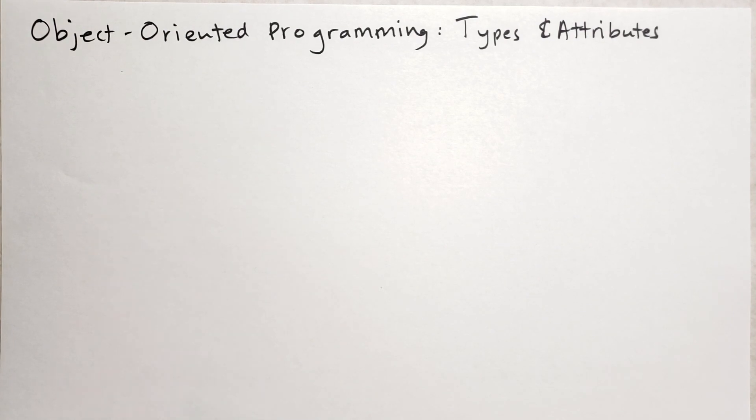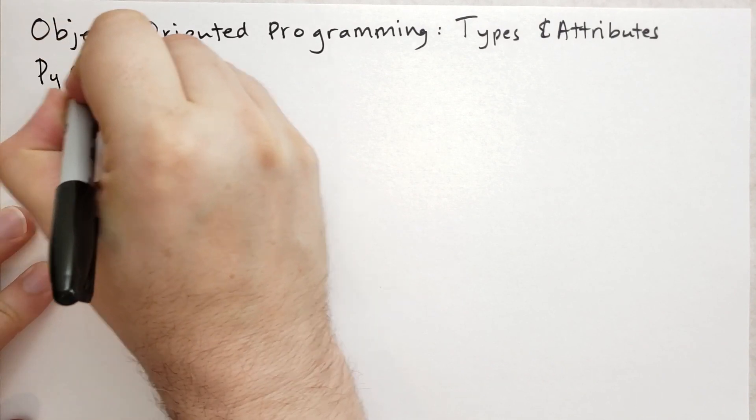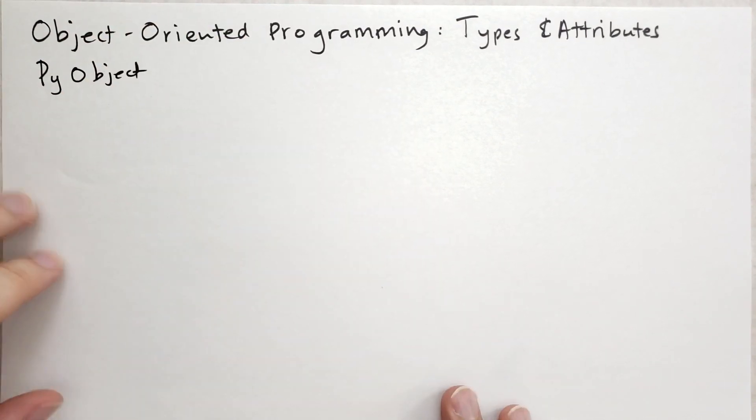If you were to dig into Python itself and look at the C level, you would see that there is this struct called py object. And the py object struct has two attributes, two fields that is the same for every object in Python. And those two fields are the reference count and the type. The type is a reference to another object, which is interesting. There's a fantasy story where they said that it's turtles all the way down. Well, in Python, in the object-oriented system of Python, it's turtles all the way down. It's objects all the way down. Types are objects.